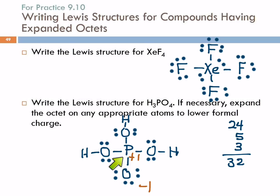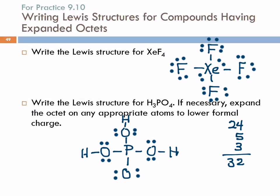We can get zero formal charge on both of these by expanding the octet on the phosphorus. We're going to move a pair of electrons from the oxygen to make a double bond with phosphorus, giving the oxygen two bonds. Now the oxygen has two bonds and its formal charge is zero. What's the formal charge on the phosphorus? It's also zero. So you expand octets on period three and larger elements if it gives you zero formal charge.